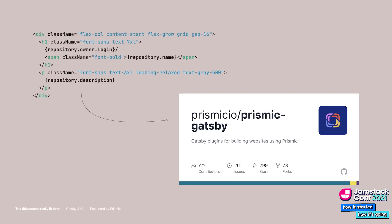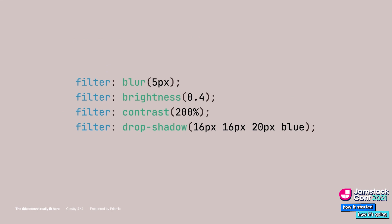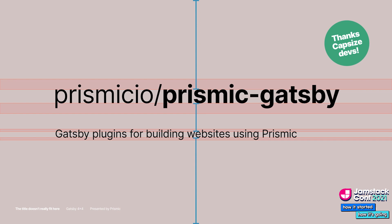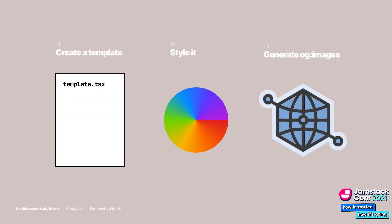Gatsby provides an easy way to generate these images at build time. The best part is that we can build it using anything that renders to the page. Want to use CSS filters? Of course you can. How about Three.js to render 3D models? That would work too. And if you're into using Capsize to accurately render text, or any other specific library, as I said, getting this to work is simple.